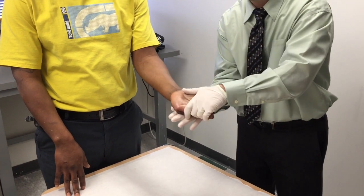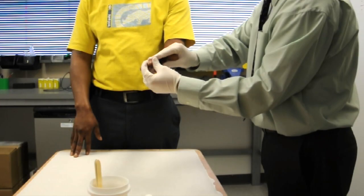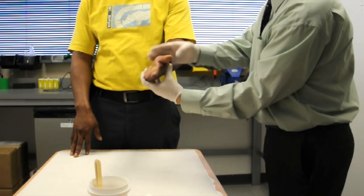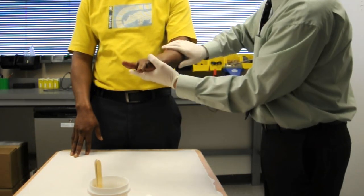If they're a hairy individual, you want to make sure that you're matting the hair down so that it doesn't stand up and get trapped in the silicone.